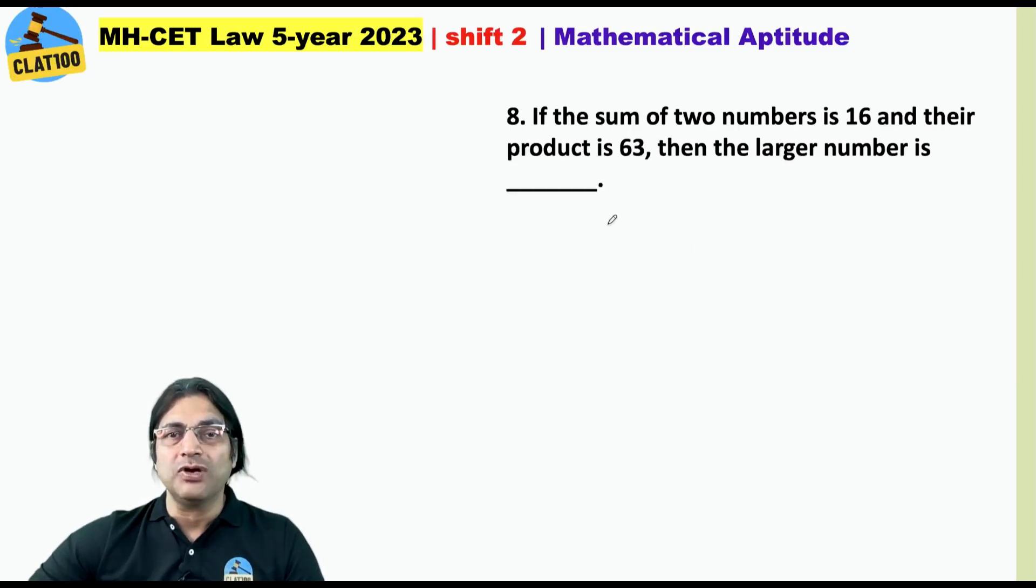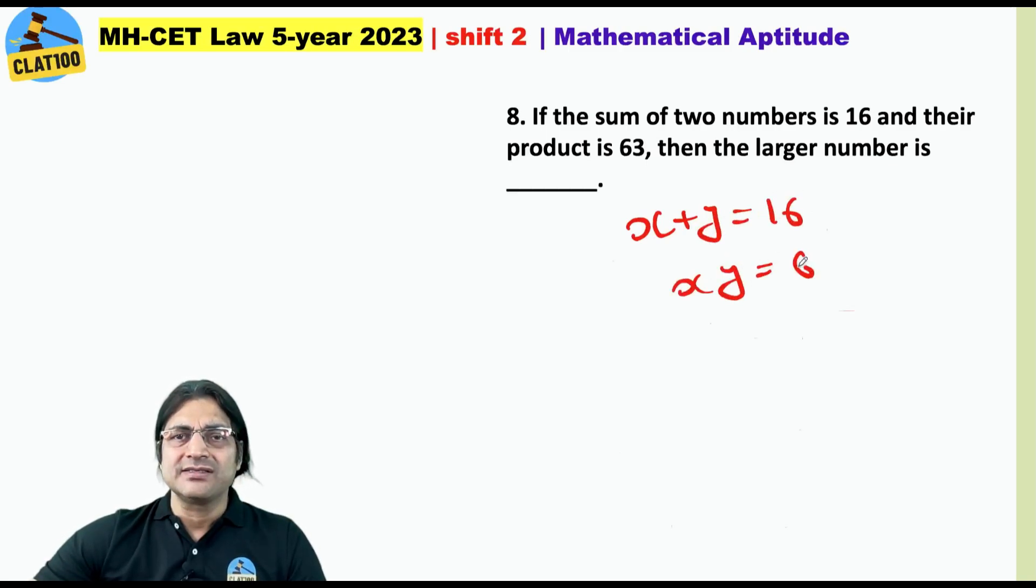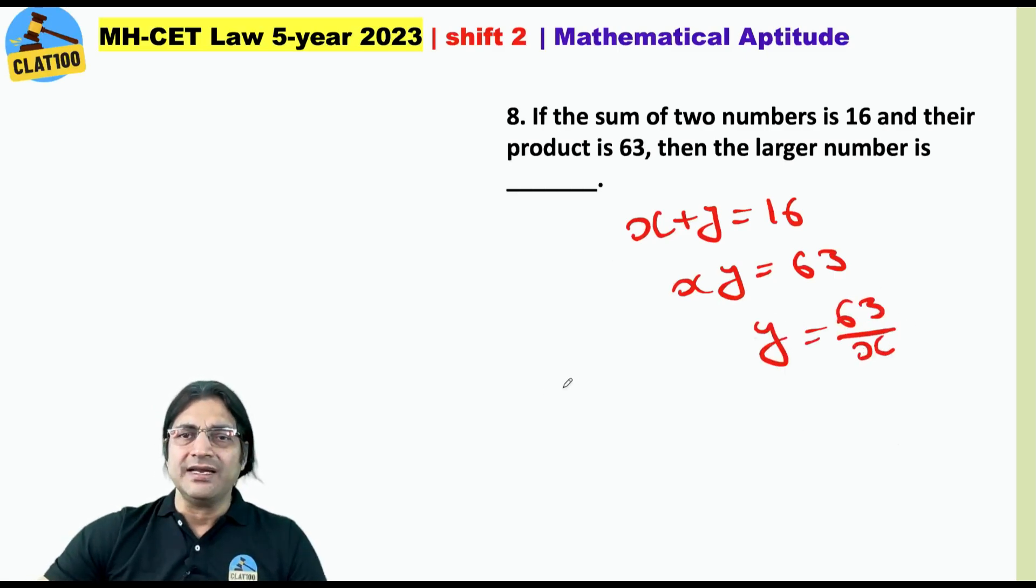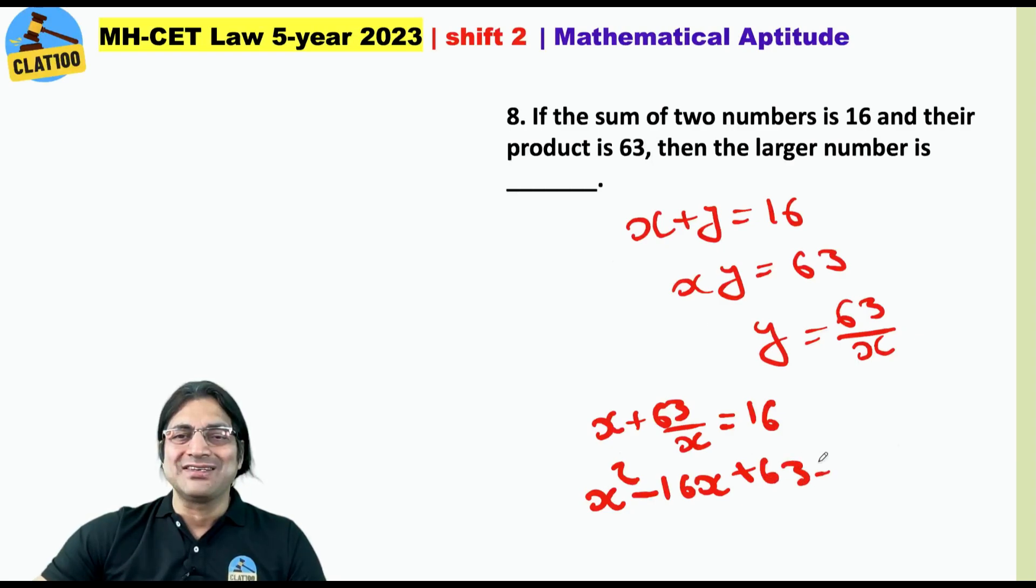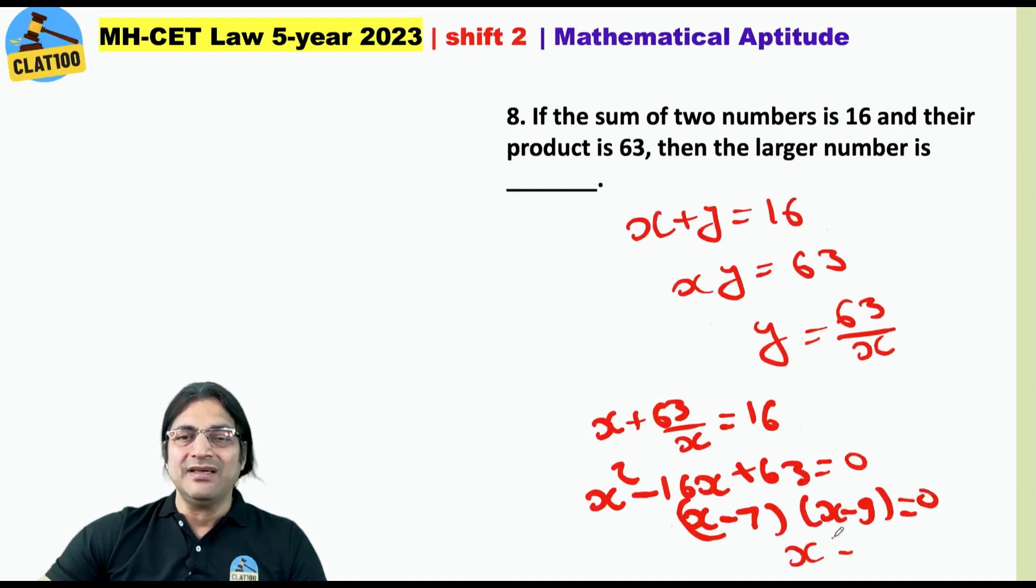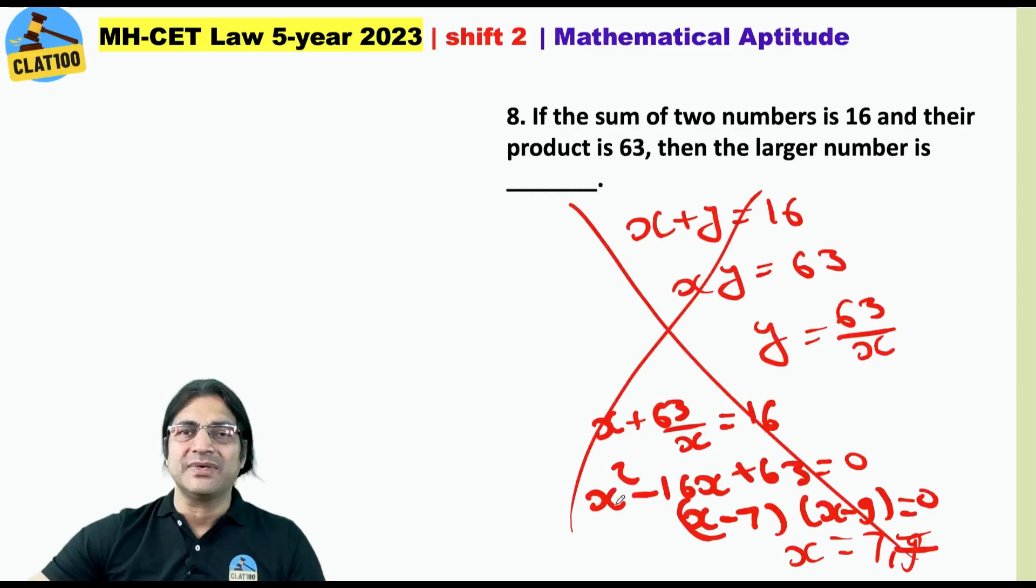How we used to do it in school? X plus Y is 16 and XY is 63. So Y is 63 by X. Then X plus 63 by X equals 16. This reduces to X squared minus 16X plus 63 equals 0. That is (X minus 7)(X minus 9) equals 0, and X can be 7 or 9. Of these two, the larger number is 9. But this is wastage of time, criminal wastage of time.